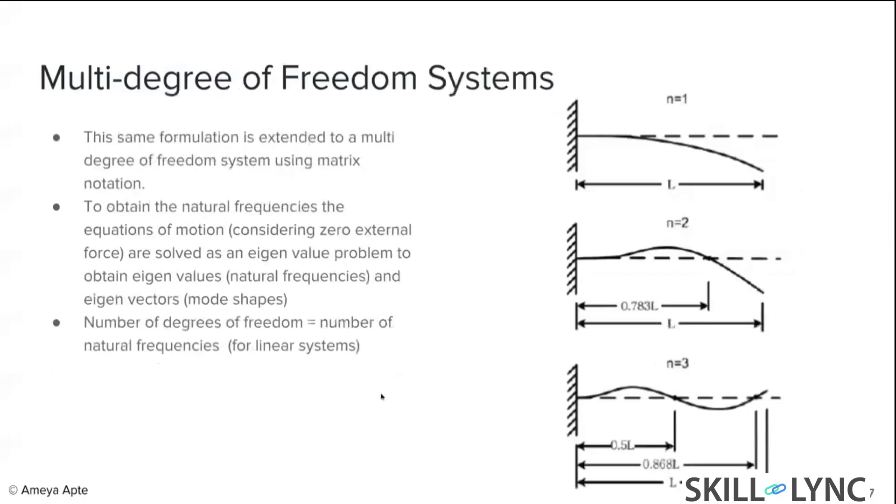In a multi-degree of freedom system, the formulation we saw for a single degree of freedom system, we can extend that using some matrix notation to a multi-degree of freedom system. And then model it as an eigenvalue problem and solve for eigenvalues and eigenvectors. Eigenvalues would be the natural frequencies and eigenvectors would be the modes that you see. On the right here, I have a quick example of what a beam looks like. This would be the first mode of the beam, a cantilever beam. This would be the second mode and the third mode.